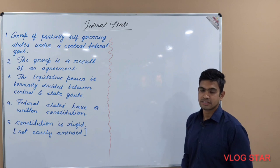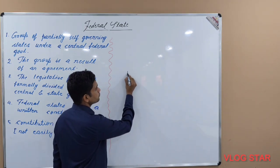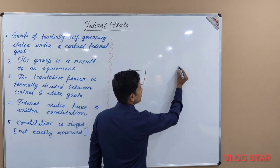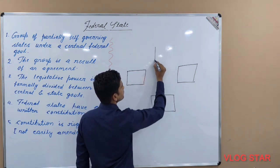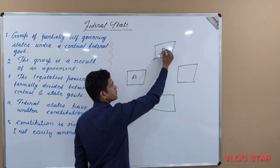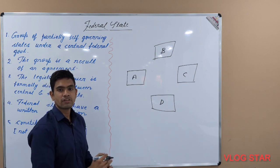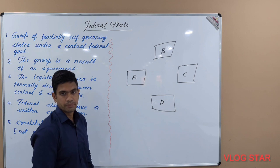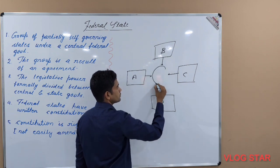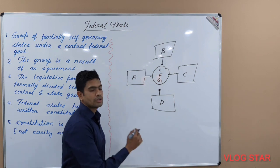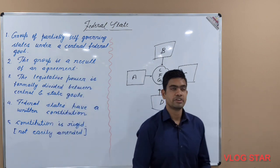A federal state is a group of partially self-governing states which work under a central federal government. For example, if there are four partially or wholly self-governing states with the names A, B, C, and D, when they come together and form a central federal government, they are called a federation, which is also called a federal state.